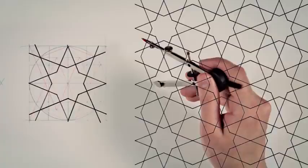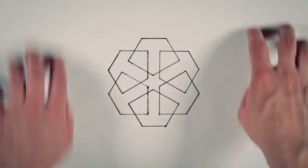We can follow the same steps to create sixfold patterns. By drawing construction lines over a circle divided into six parts, and then tessellating it, we can make something like this.